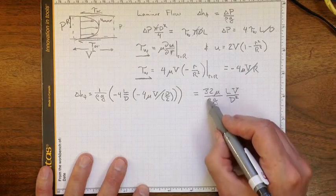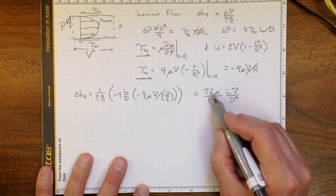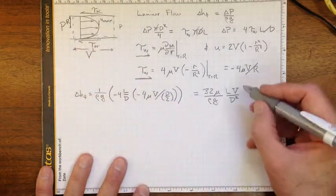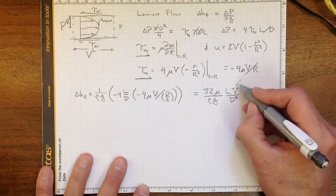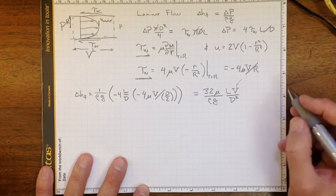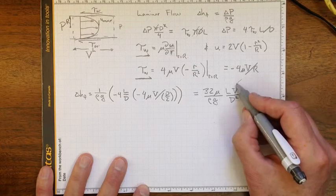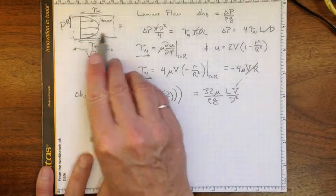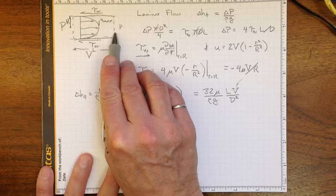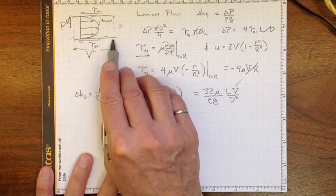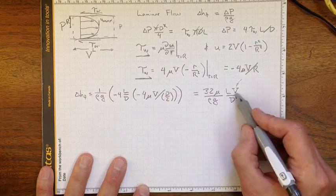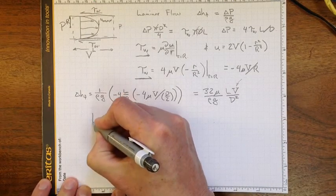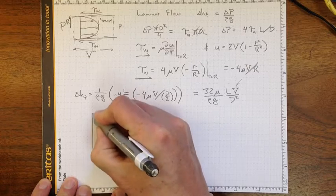So all of these things here are constants for a given piece of pipe, except for the velocity. So what this tells us is that if we measure the head loss due to friction, this pressure drop, we should see a linear relationship with velocity.